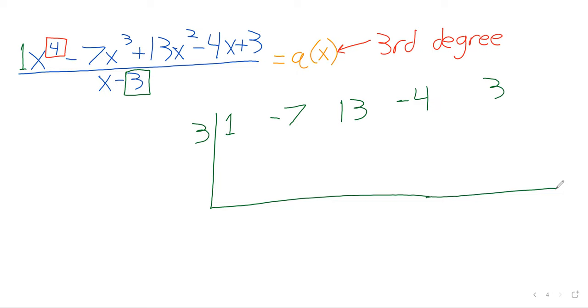And synthetic division... getting kind of crowded here. But step one is a dropping down step. Whatever number we have written first just comes right down. So that one comes down.